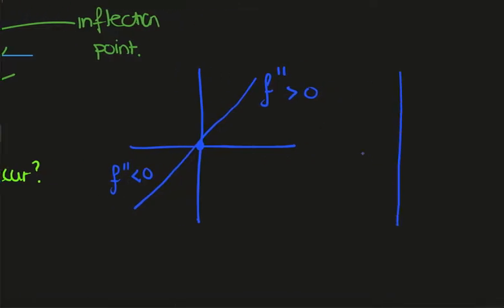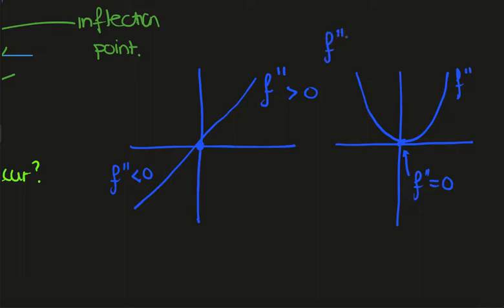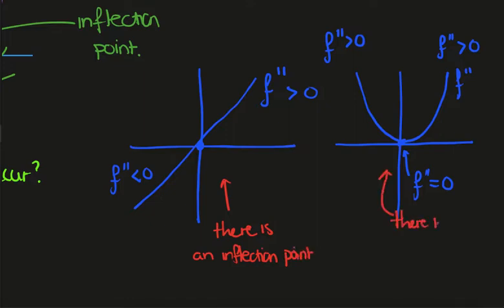What we want to avoid is if the second derivative looked like this — say it vanishes here, so f double prime equals 0, but to the left the second derivative is positive and to the right the second derivative is also positive. In this first case there is an inflection point at x equals 0, but for this second case I claim there is no inflection point.